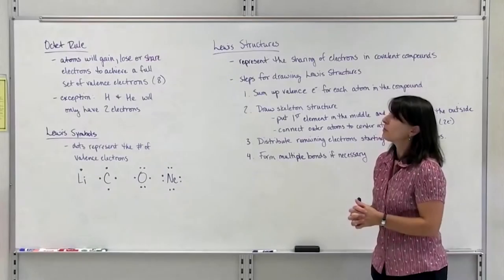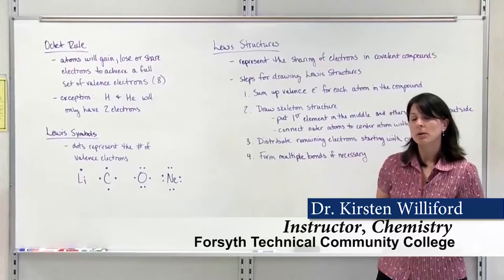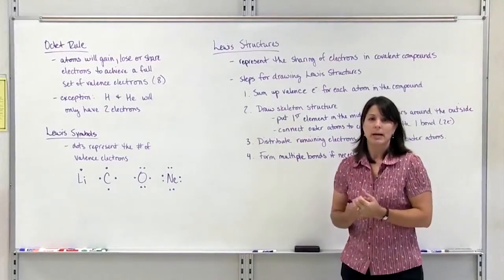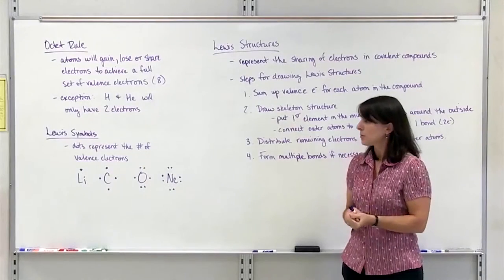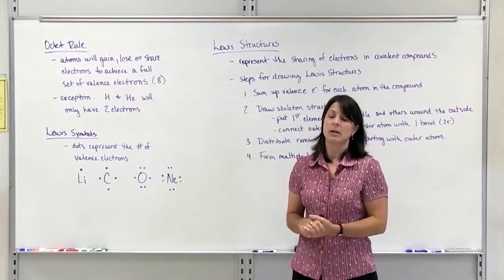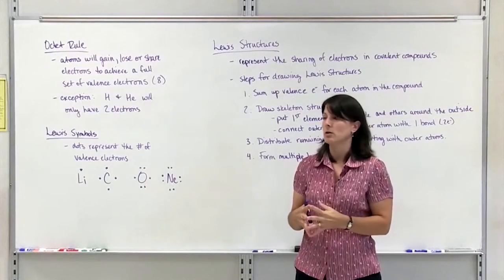In this video, we're going to discuss the octet rule and Lewis structures for simple elements. If you recall from the periodic table, the noble gases, which are in group 8A, are the least reactive elements on the periodic table. They are the least reactive because they have a full set of valence electrons. They have 8 valence electrons.